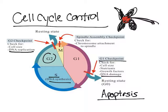It's important to remember that cyclins are the key when it comes to checkpoints. Cyclin levels rise and fall during the cell cycle, and if the levels aren't at the right amount, cell division stops at certain checkpoints.